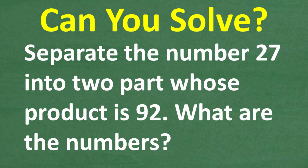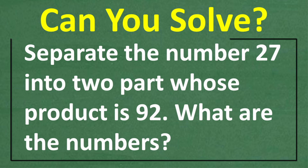Hello, this is John from TC Math Academy, and what I have for you here is a nice interesting algebra word problem. So let's go ahead and read the problem. It says: separate the number 27 into two parts — two numbers whose product is 92. What are the numbers?